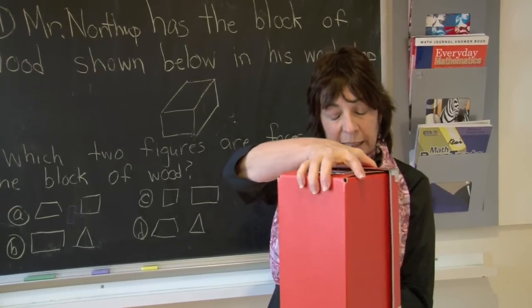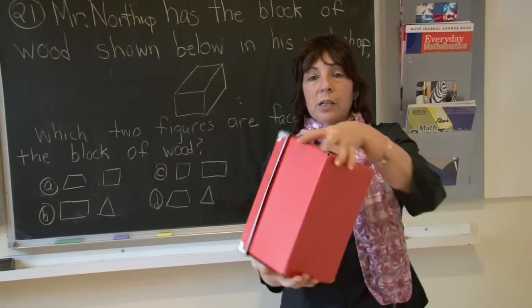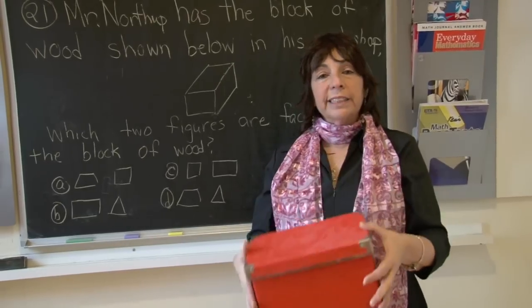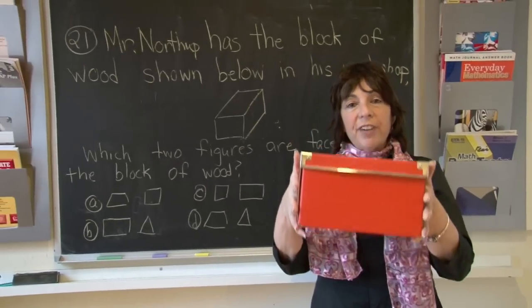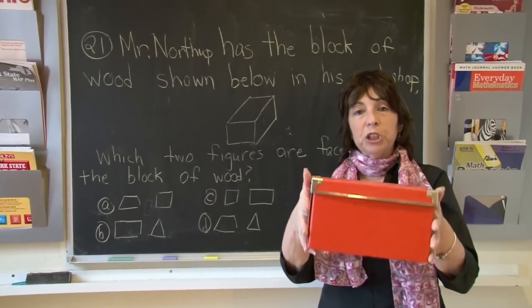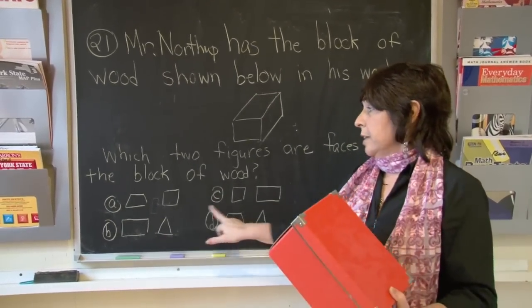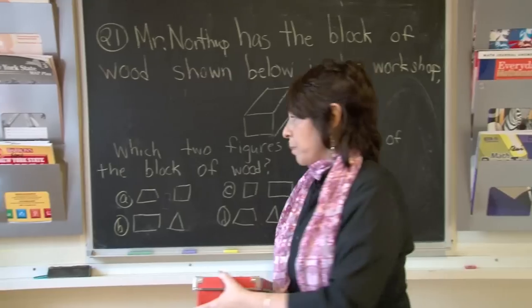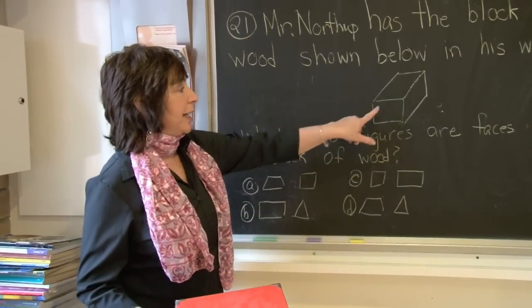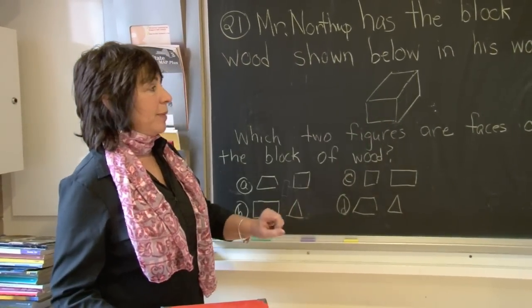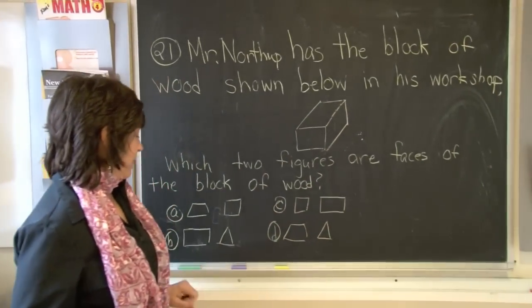It can lay on its face, even on the square side. So a rectangular prism has six faces. Let's see which two would be faces of this shape. There are no trapezoids in a rectangular prism. As you can see, there are rectangles and there are squares.